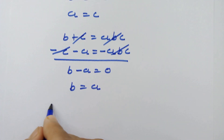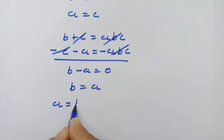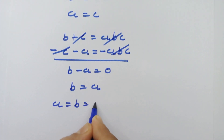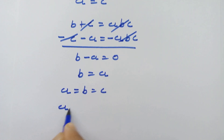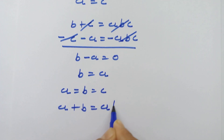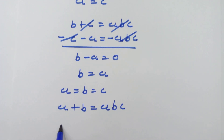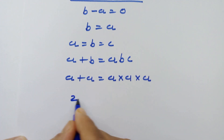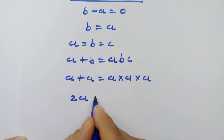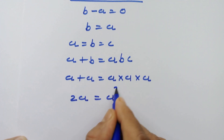So we have A is equal to B is equal to C. Now let's take equation number 1: A plus B equals A times B times C. We can rewrite this as A plus A equals A times A times A. So we have 2A is equal to A cubed.